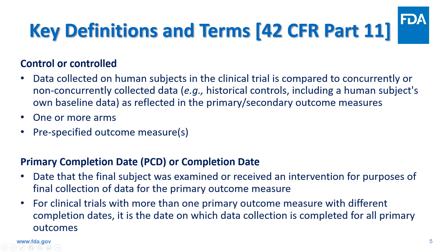Primary completion date or completion date — these are interchangeable terms under the final rule. The primary completion date is an important definition for purposes of meeting submission of results information timing requirements. The final rule defines the primary completion date as the date the final subject was examined or received an intervention for purposes of final collection of data for the primary outcome measure. Responsible parties may submit initially an estimated primary completion date, but when the study is completed, the responsible party should revise this to the actual primary completion date. The standard submission deadline is no later than one year after the primary completion date under 42 CFR Part 11.